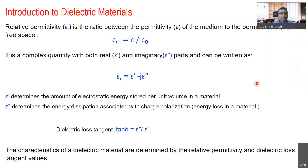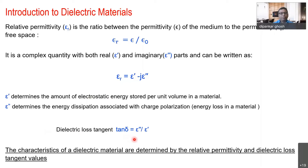Relative permittivity is the ratio between the permittivity of the medium epsilon and the permittivity of free space. It is a complex quantity with a real part epsilon-prime and an imaginary part epsilon-double-prime. The real part determines the amount of electrostatic energy stored per unit volume. The epsilon-double-prime determines the energy dissipation associated with charge polarization — it is a loss. We quantify this as the dielectric loss tangent, which is the ratio of epsilon-double-prime to epsilon-prime. For a capacitor, we want epsilon-prime as high as possible and epsilon-double-prime as low as possible.